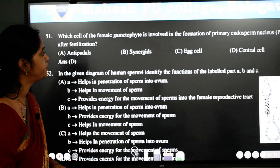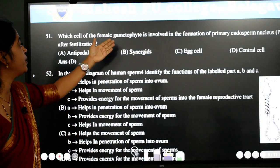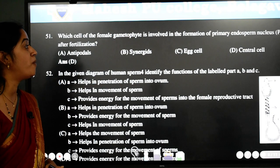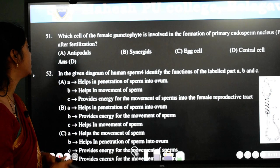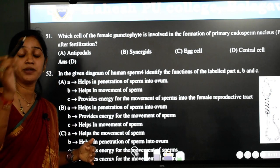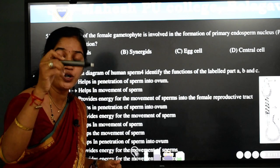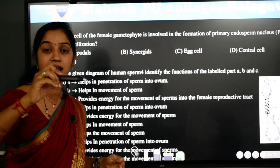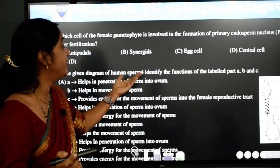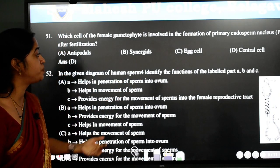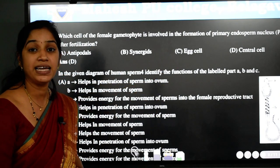51st question. Which cell of the female gametophyte is involved in the formation of primary endosperm nucleus after fertilization? It is nothing but the central cell which will be having already two nuclei and after fertilization, one more nuclei add up and that will result into the formation of endosperm. So the answer here is D, central cell.